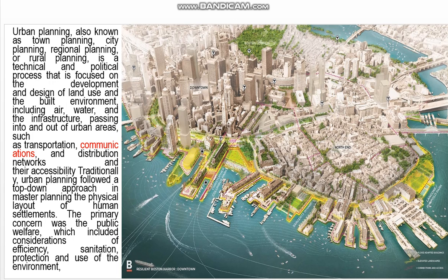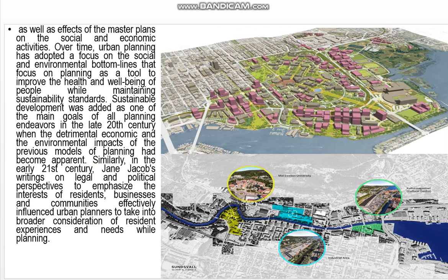Traditional urban planning followed a top-down approach in master planning the physical layout of human settlements. The primary concern was the public welfare, which included consideration of efficiency, sanitation, protection, and use of the environment, as well as the effect of the master plans on social and economic activities.